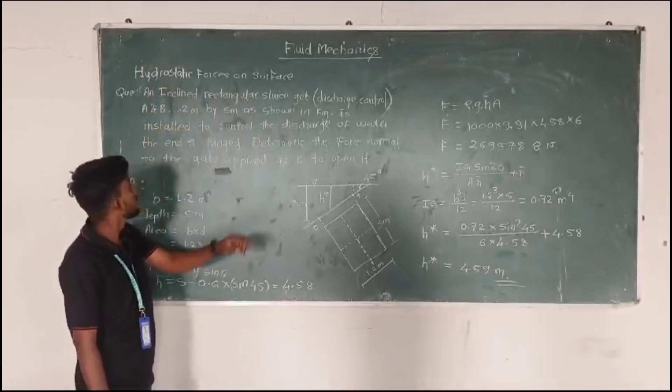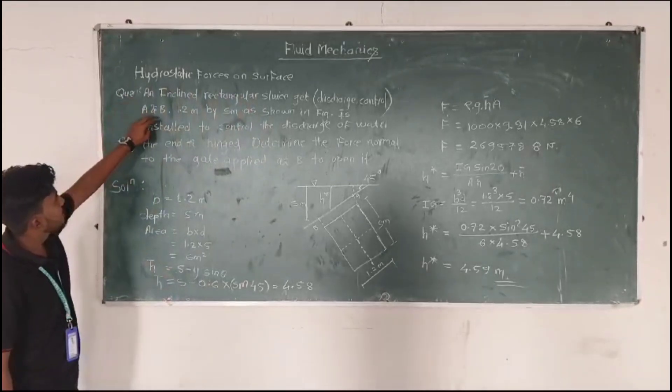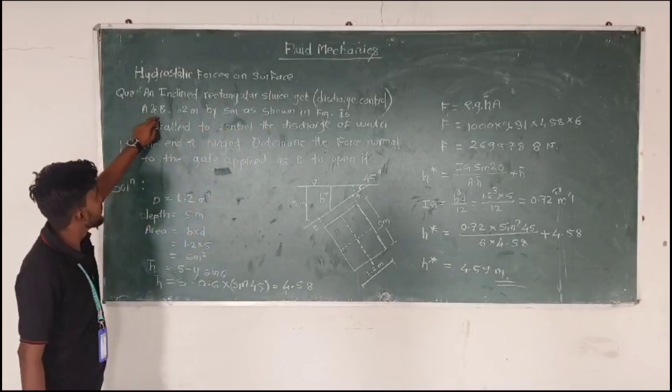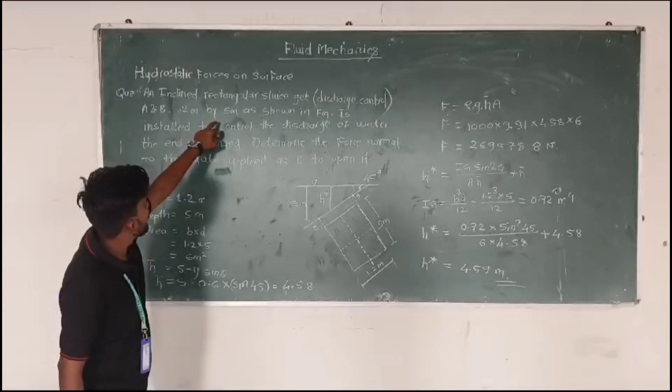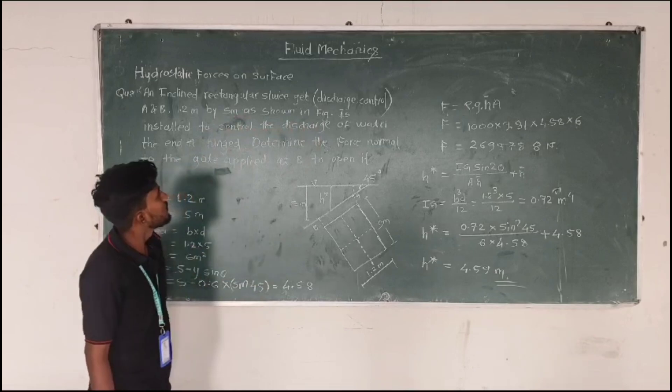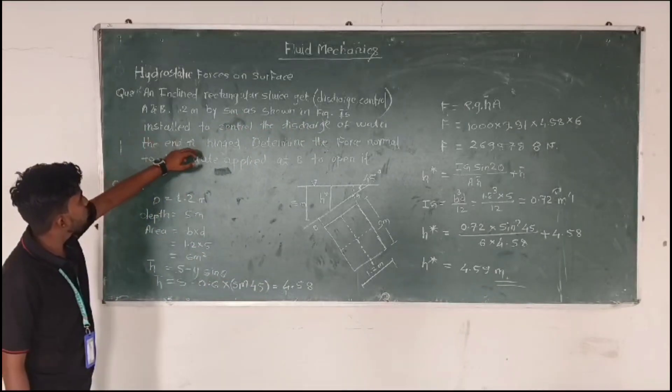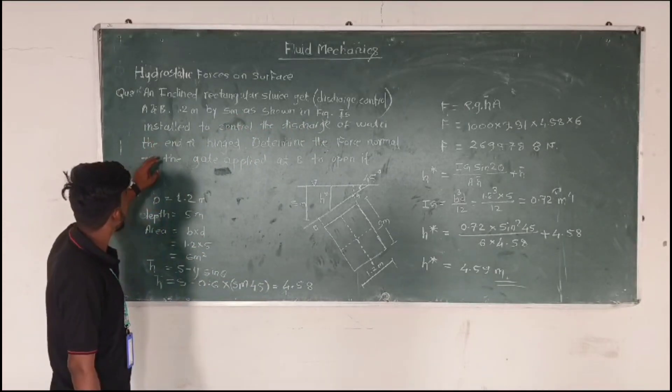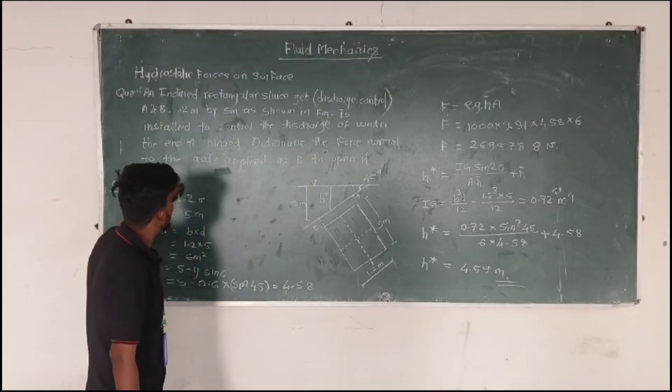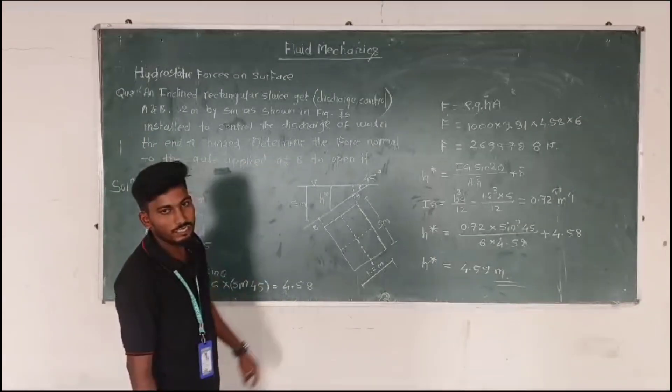Hydroscopic courses on surface. So question, at inside rectangular slices, discharge control A and B. So we are going to filter Biorel, Hiometer, and storage mirror installed to control the discharge of water. The air cover is vitalizing the courses lower to the gate applied at the to open it.